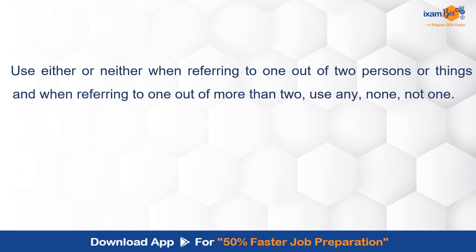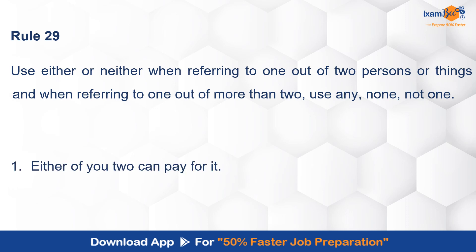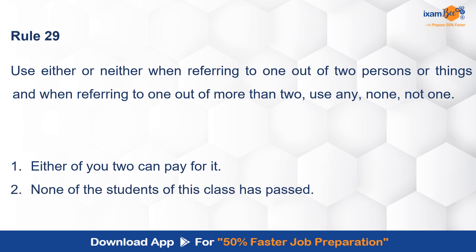The next rule says that 'either' and 'neither' are always used for one out of two persons — so whenever two people are involved, use either/neither. When talking about one out of more than two, use 'any' or 'none.' For example: 'Either of you two can pay for it' — two people are being discussed. But 'None of the students of this class has passed' — here it is about many students, so 'none' is used.